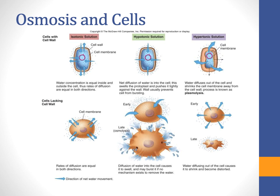If a cell is put into a hypotonic solution, water moves into the cell because water concentration is higher outside. If cytoplasm is normally 70% water and we put the cell into a 100% water solution, water would move inside to even out concentrations, and the cell can actually lyse. If there is no cell wall, lysis is very likely. In most cases, the cell wall stops excessive water from entering — a nice adaptation for aquatic microbes.